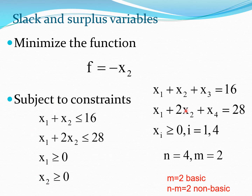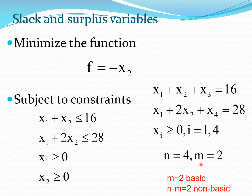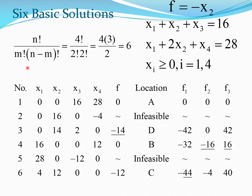We add X3 and X4 as slack variables to convert the inequality constraints into equality constraints. This makes N equal to 4 (four design variables) and M equal to 2 (number of constraints). Therefore M equals 2 basic variables and N minus M equals 2 non-basic variables, giving us 4!/(2! × 2!) equals 6 basic solutions.